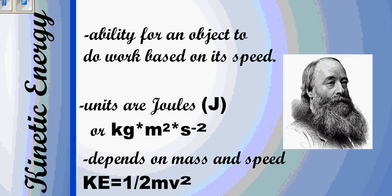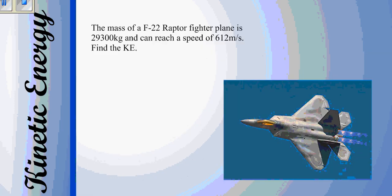Now, to go and talk about doing a problem with kinetic energy. So for this part, we have an F-22 Raptor fighter plane which has a mass of 29,300 kilograms and can reach a top speed of 612 meters per second. If we want to find the KE, the first thing that we always do is write down what we know. So we know the mass, and we know the velocity.